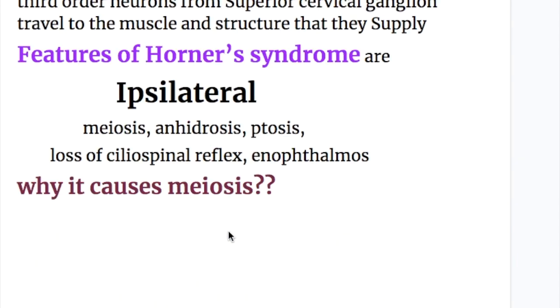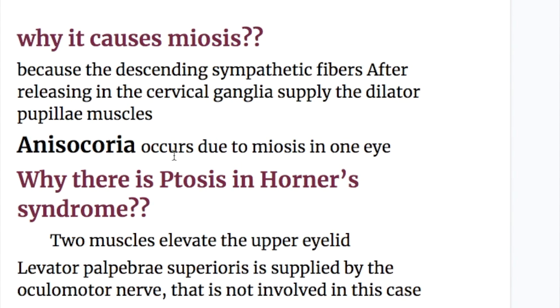The features of Horner's syndrome are ipsilateral, because the fibers travel on the same side. These features are miosis, anhydrosis, ptosis, loss of the cilio-spinal reflex, and enophthalmos.